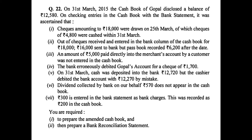In this question we are required to prepare the amended cash book. Since 18,000 of checks were issued, Gopal would have deducted 18,000 from the cash book. But up to 31st March only 4,800 was cashed — meaning only 4,800 was deducted from the pass book. The remaining 13,200 (18,000 minus 4,800) was not deducted from the pass book, so the cash book shows 13,200 less. This 13,200 will be put in the plus column in the BRS.